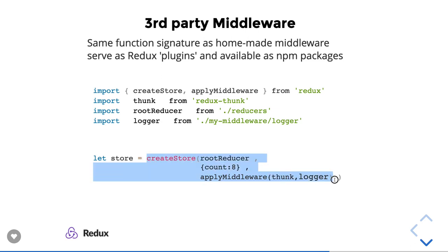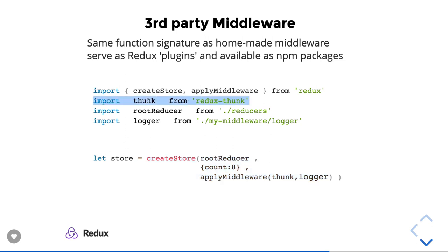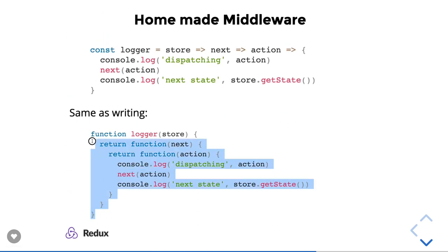While creating the store, you have to register all these middlewares together so your reducers can deal with them in your actual application. If your actions contain a promise, Redux Thunk will stop that request, wait until the promise is resolved, and then send the data to the reducers. This is all about middlewares. There are third-party middlewares like Redux Saga, Redux Promises, and Redux Thunk, and you can also create your own homemade middleware. Thanks everyone.